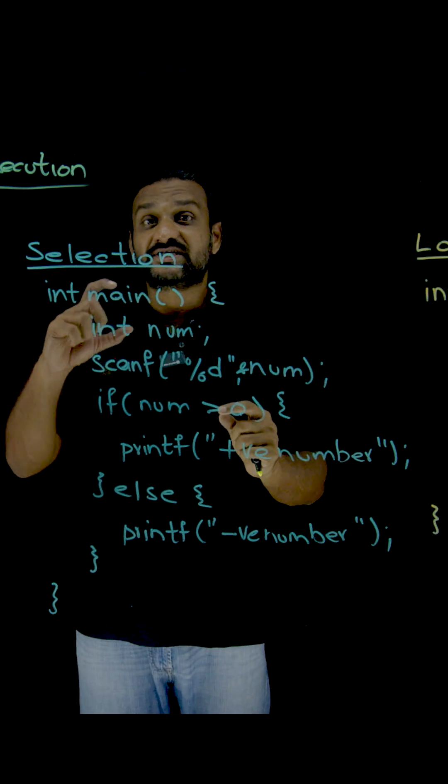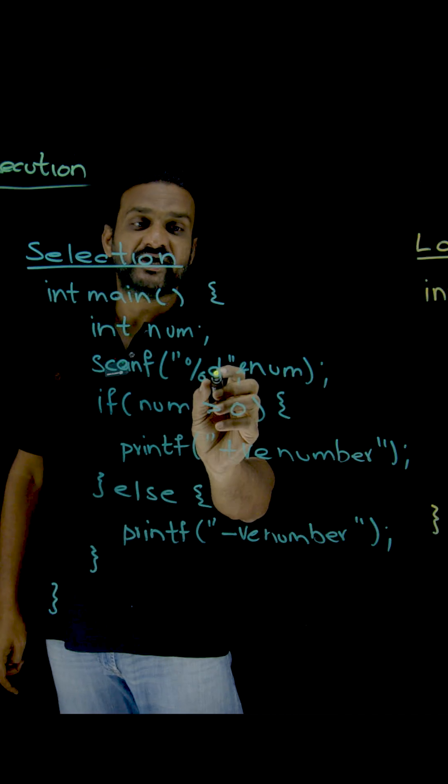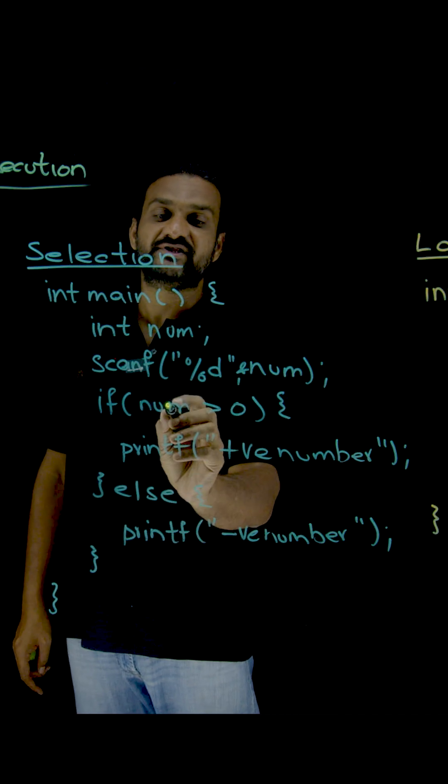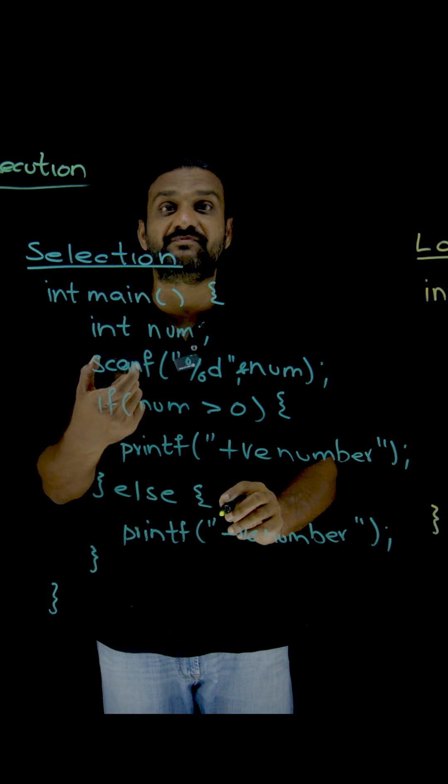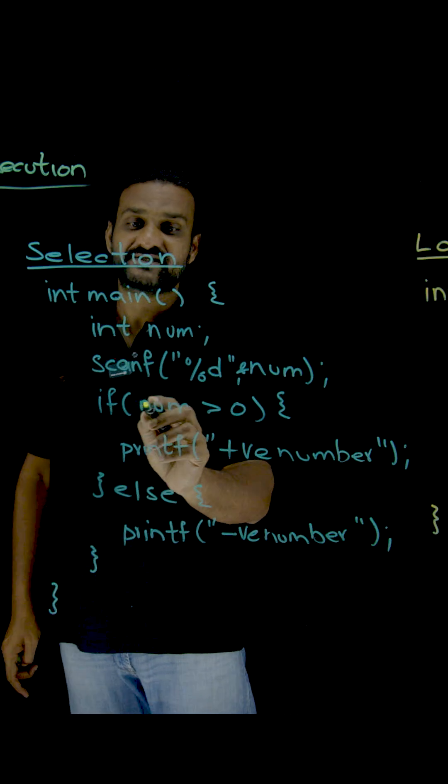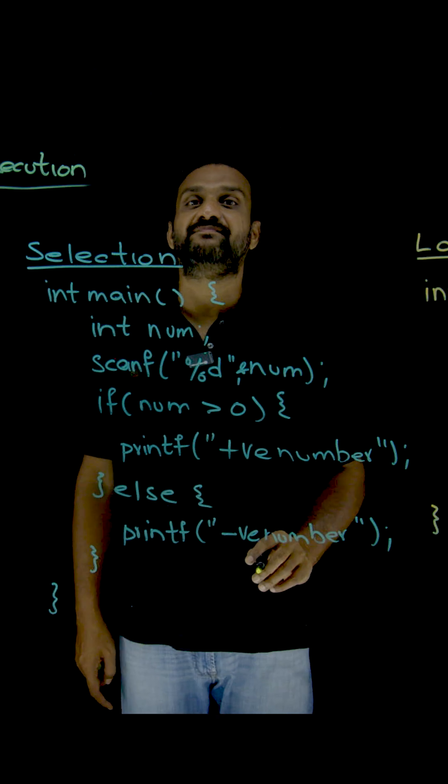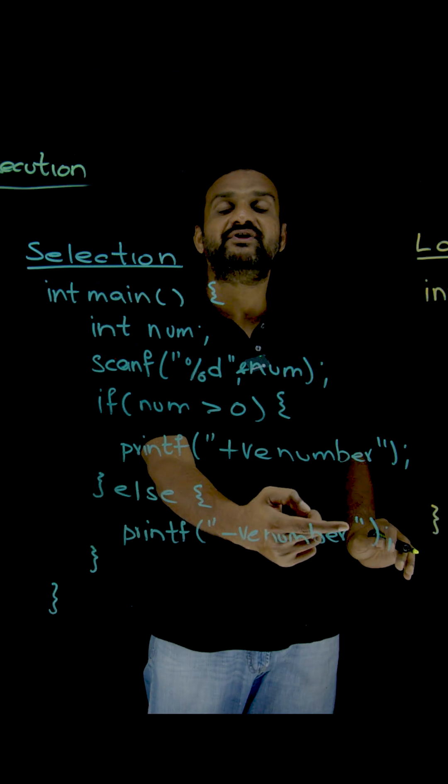In that particular case, some will get executed. Let's take this example. In this program, we are deciding whether the number provided by the user is a positive number or not. If num is greater than zero, we are going to print it as a positive number, or else this one will get executed.